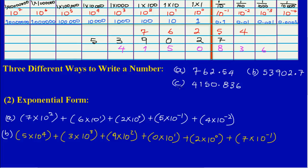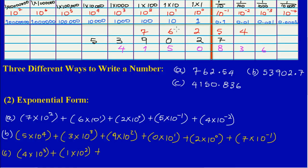Now for part C, the number is 4,150.836. The 4 is in the 1,000 column, so we have (4 × 10³). That's added to (1 × 10²), and then I have a 5 in the tens column, so (5 × 10¹). Then there is a 0 in the units column, so (0 × 10⁰).